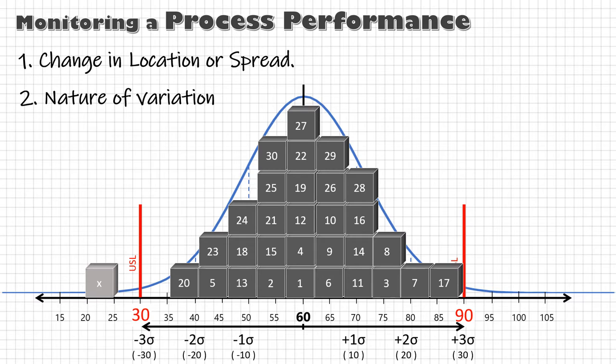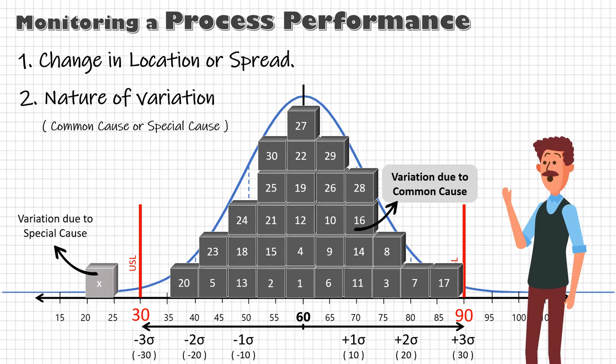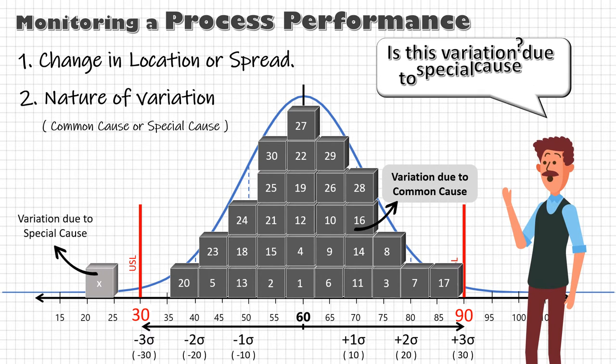Since there always will be part-to-part variation, it is essential to differentiate between variation due to common cause and variation due to special cause. Because when we judge that a variation is due to a special cause when in fact it is due to a common cause, we falsely believe that something is wrong with the process and try to over-adjust unnecessarily.